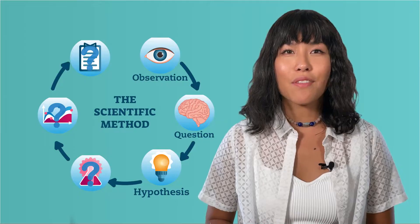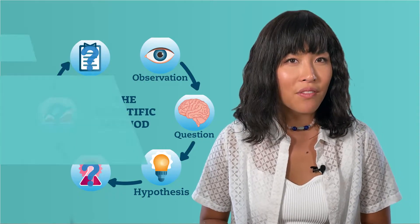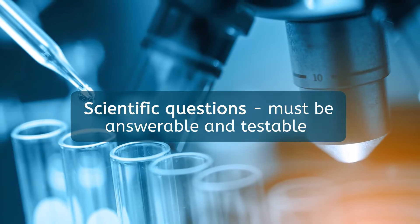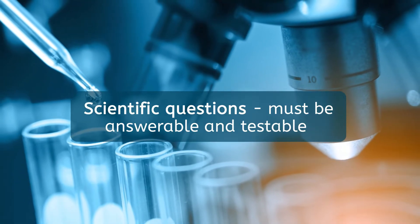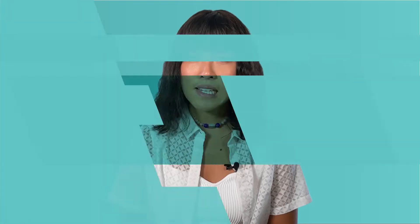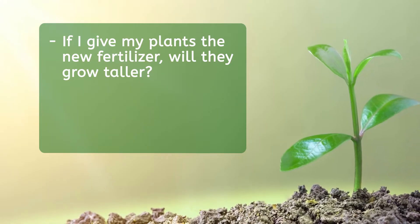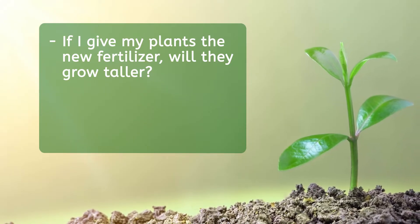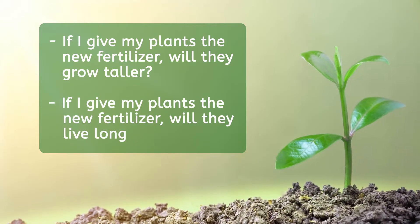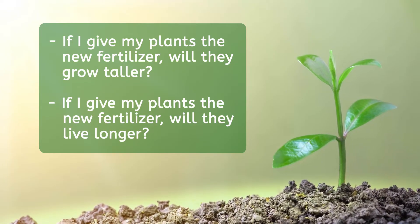Before I try to apply the scientific method, I need to decide if I have a scientific question. To be a scientific question, it must be answerable and testable. It cannot be based on opinion or be too open-ended. A good related scientific question for my observation might be: if I give my plants the new fertilizer, will they grow taller? Or maybe I just want them to survive — I could ask, if I give my plants the new fertilizer, will they live longer? Both of these questions meet our requirements. They are answerable and testable, so I can use science to answer them.